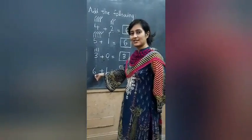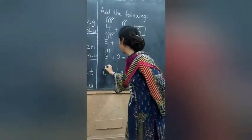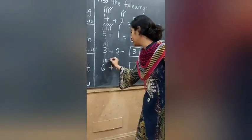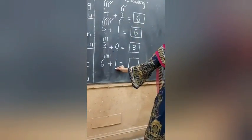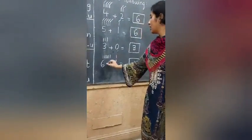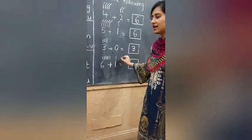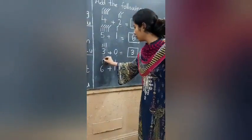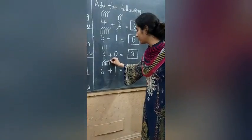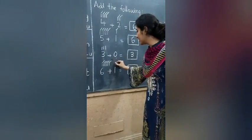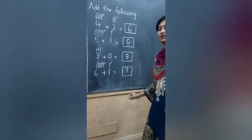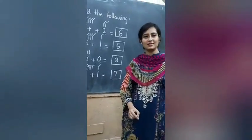Now next. Which number is this? 6. 1, 2, 3, 4, 5, 6. Which number is this? 1. 1. How many lines? Count them. 1, 2, 3, 4, 5, 6, 7. Answer is 7.